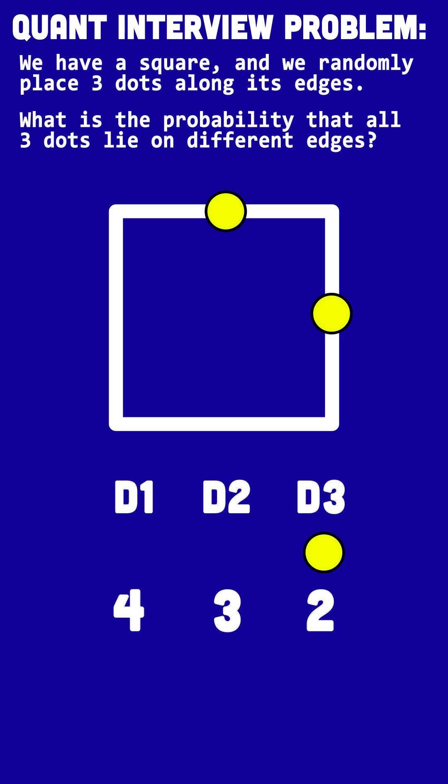So what are the total possible ways to arrange the three dots along different edges? Four times three times two, which is 12 times two, 24. That's 24 ways to arrange three dots on different edges.